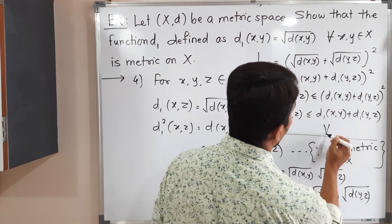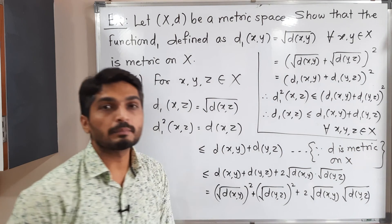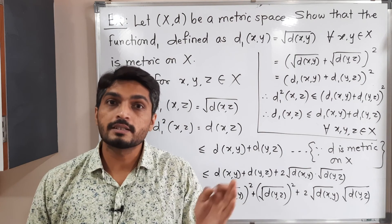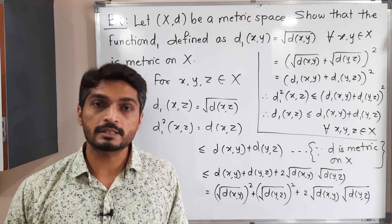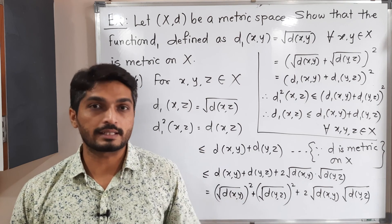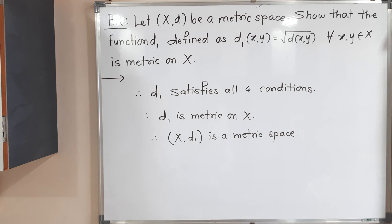This is true for all x, y, z belonging to X, which is nothing but the triangle inequality. So d1 satisfies the triangle inequality, meaning d1 satisfies all four properties. Therefore we can say d1 is a metric on X — d1 satisfies all four conditions, therefore it is a metric on X, and therefore (X, d1) is a metric space.